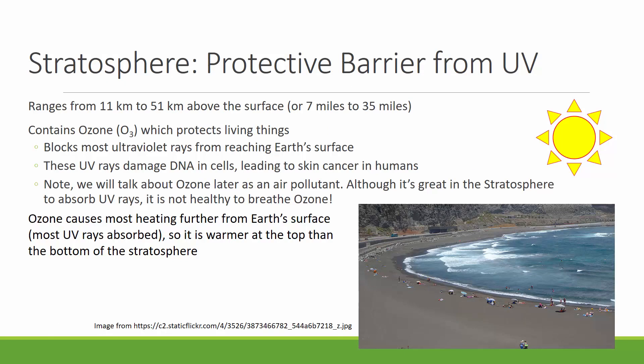The stratosphere is the next layer up, and it's actually very important. It extends from 11 kilometers to about 51 kilometers above the surface, which is about 35 miles above the surface. This is the layer that contains ozone. Ozone is something you don't want to breathe in — we'll talk about that later in our air pollution section — but it's really great for absorbing ultraviolet rays. So the stratosphere helps to protect Earth's surface from lots of ultraviolet rays coming through.